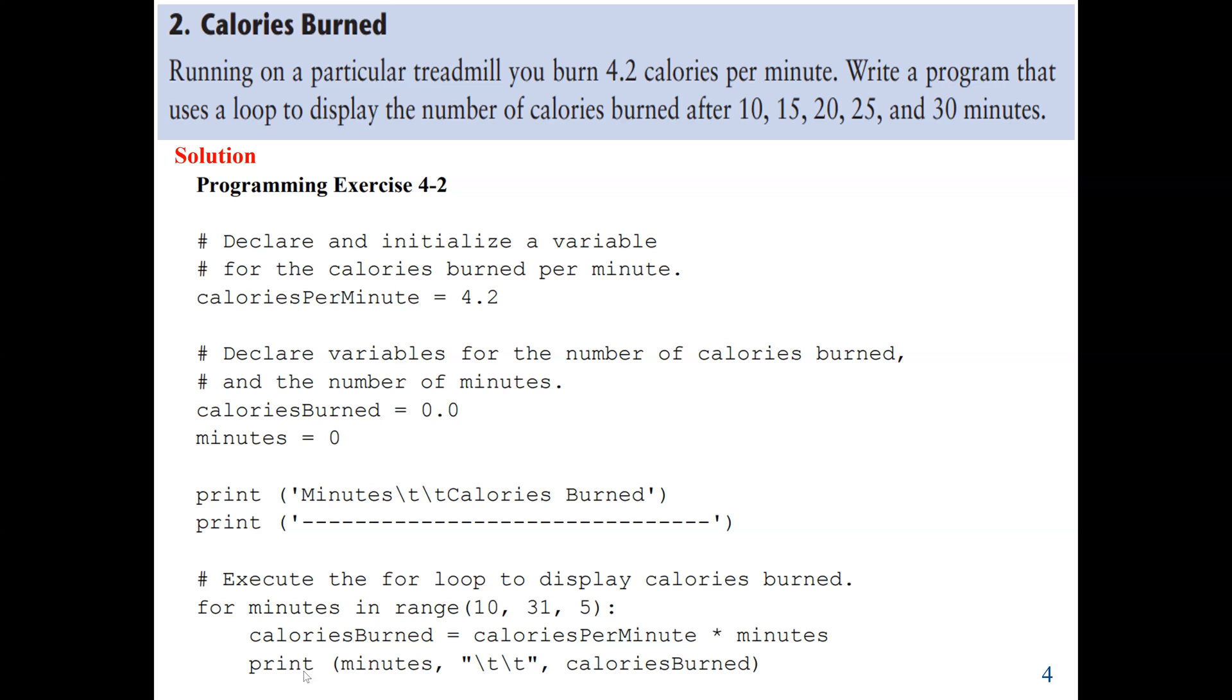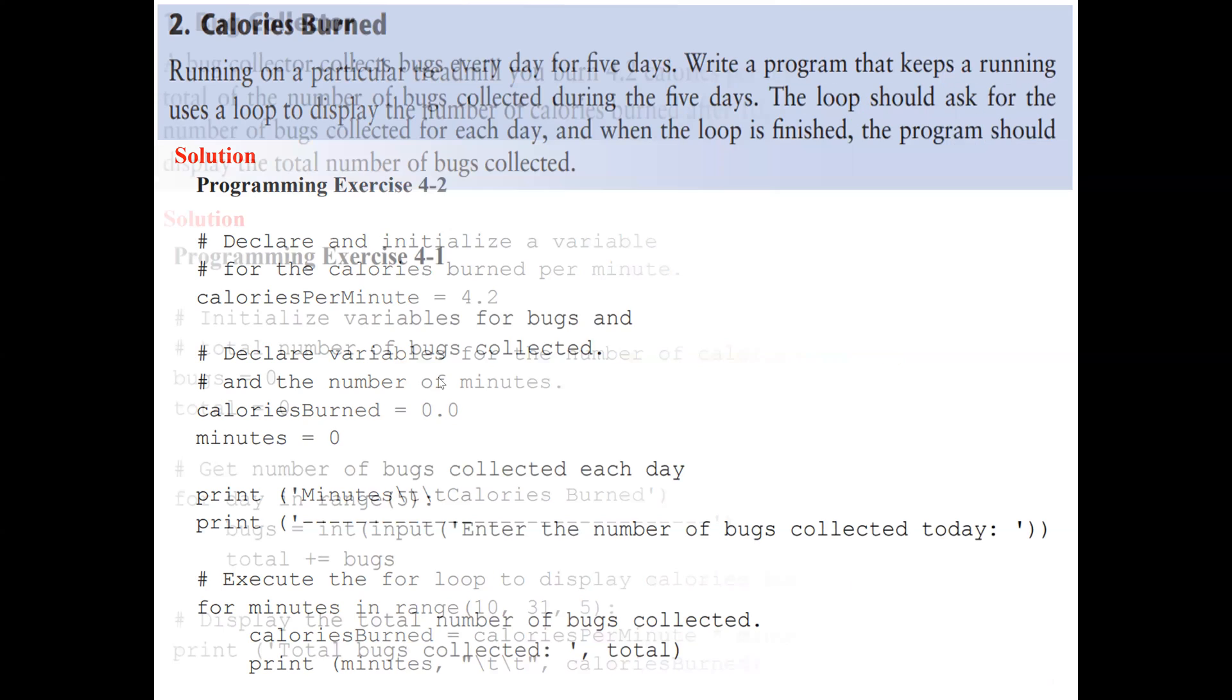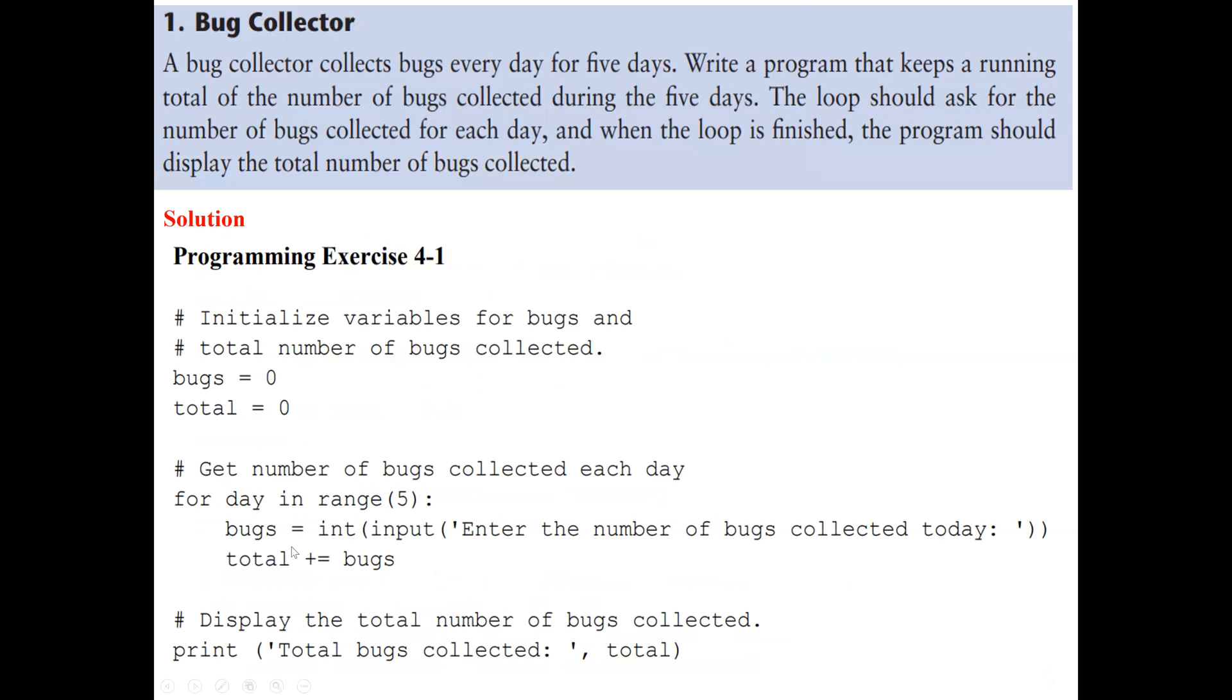So then when we finish, we can display the results. So here we can see in the previous question, we need only one result, the total. Let's go back. In our previous question here, we need a total bugs for the whole five days. So we display the results only once outside the for loop.